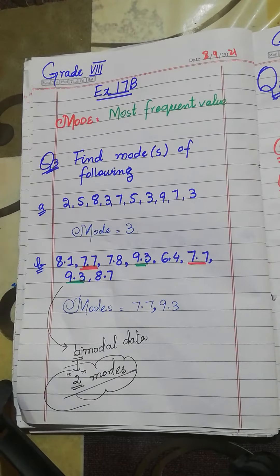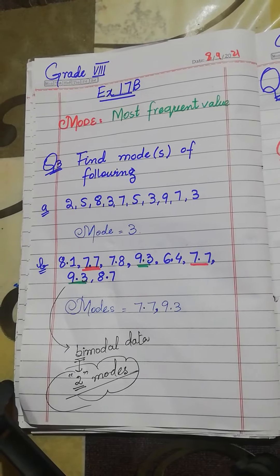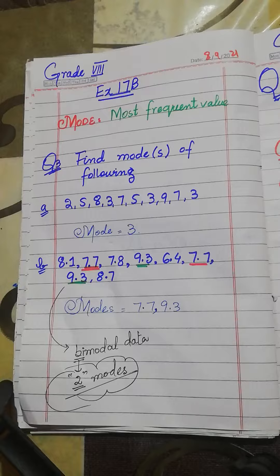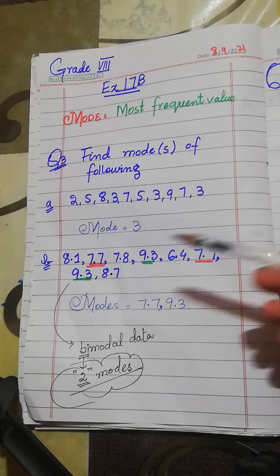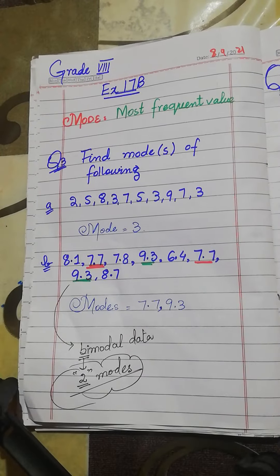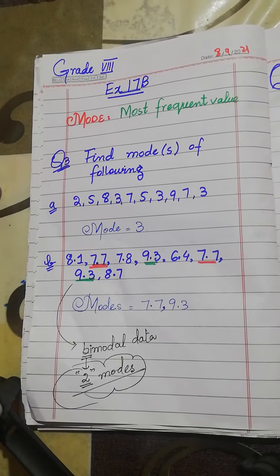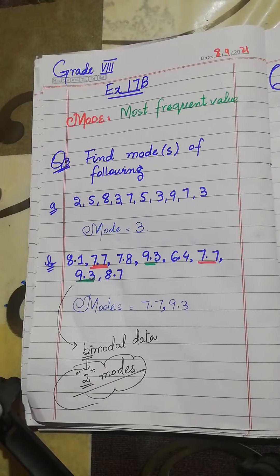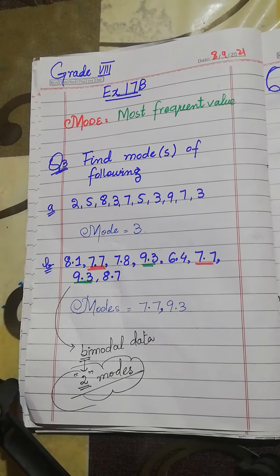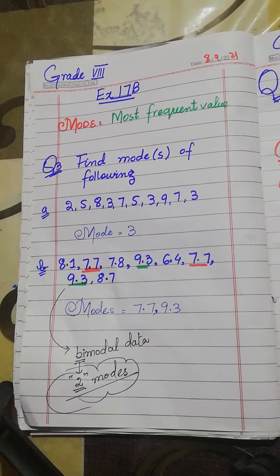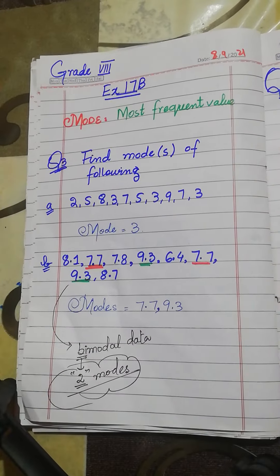In Part B, 7.7 appears 2 times and 9.3 appears 2 times, which means this data has 2 modes. Data which has more than one mode — specifically 2 modes — is called bimodal data. 'Bi' means 2, so bimodal data consists of 2 modes.